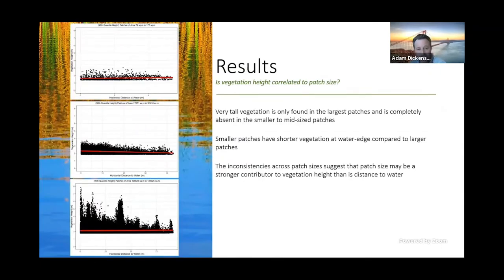Is vegetation height correlated to patch size? So again, here I'm looking at only the maximum vegetation height, this time grouped by patch size. So here we see that very tall vegetation is only present in the very largest patches and is completely absent from small to mid-sized patches. Smaller patches generally have shorter vegetation heights throughout the patch. And interestingly, small patches also have shorter vegetation at the water's edge compared to vegetation at the water's edge of the larger patches. Finally, looking at the mid-sized patch in the middle, we see a strong and consistent decline in vegetation height with distance to water. And what this may indicate is an inland buildup of litter contributing to a decrease in plant productivity. So these inconsistencies among patch sizes indicate that vegetation height may be more strongly related to patch size rather than distance to water.